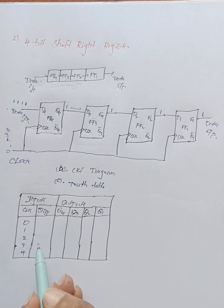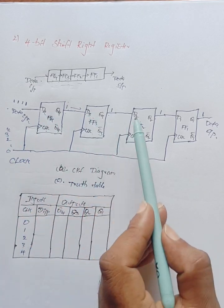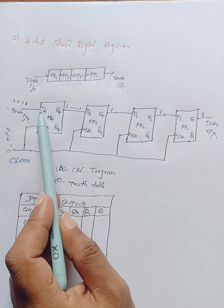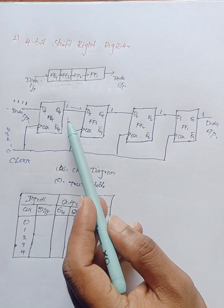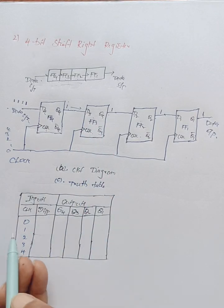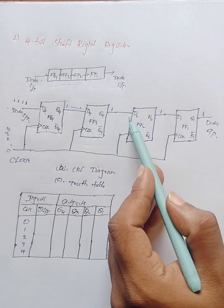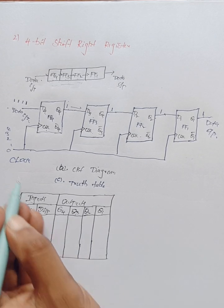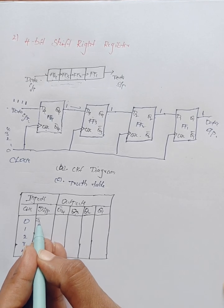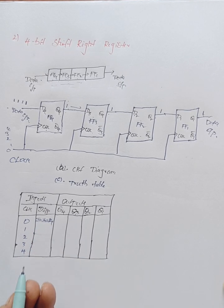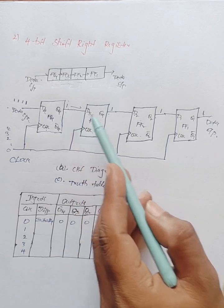Next, let us see the truth table of the 4-bit shift right register. The inputs are D4, D3, D2, D1, and the outputs are Q4, Q3, Q2, Q1. Whenever the initial clock is zero, all four flip-flops are in reset condition, and the output data becomes zero, zero, zero, zero.